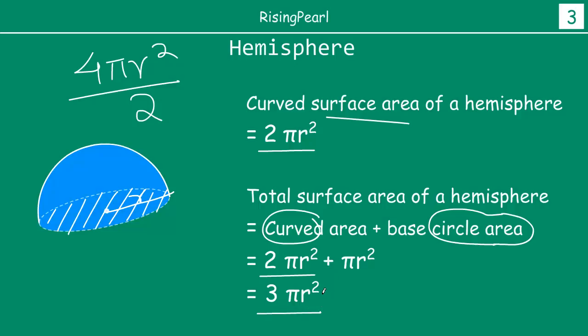So it is very important to understand that the curved surface area of a hemisphere is 2πr². The total surface area of a complete sphere is 4πr². And the total surface area of a hemisphere that includes the curved surface area plus the area of a circle, that will be 3πr².